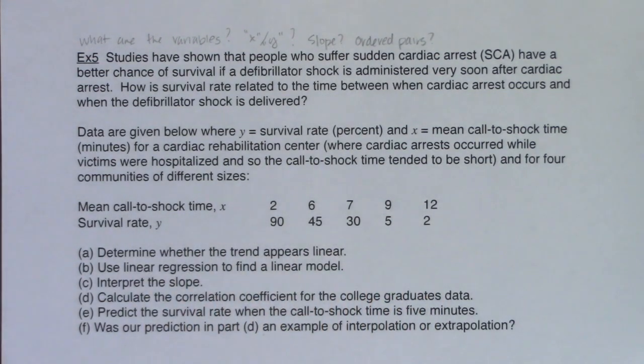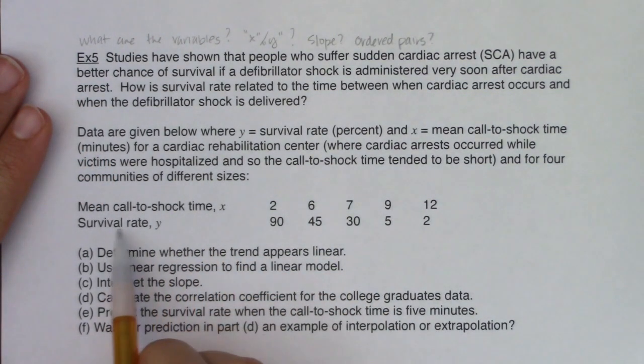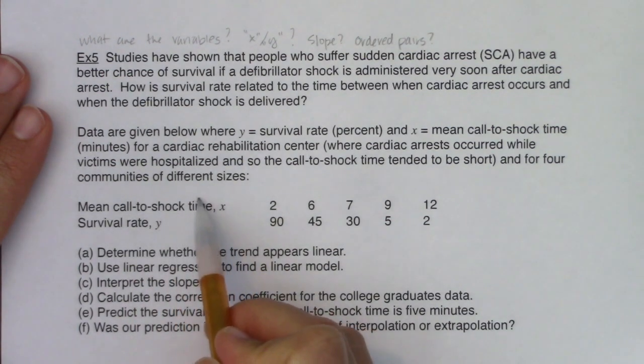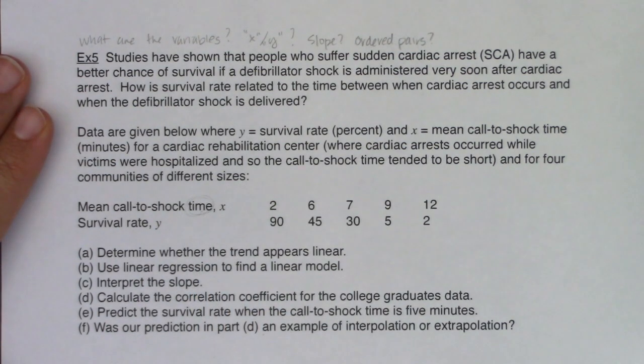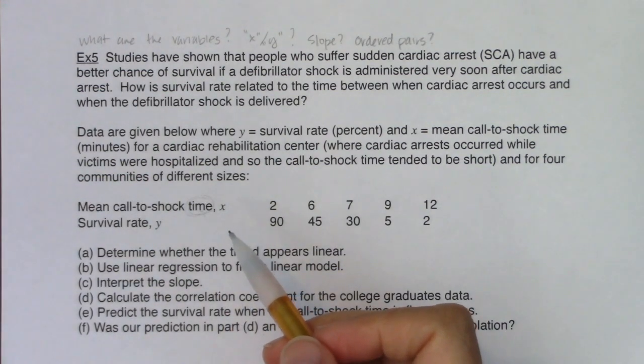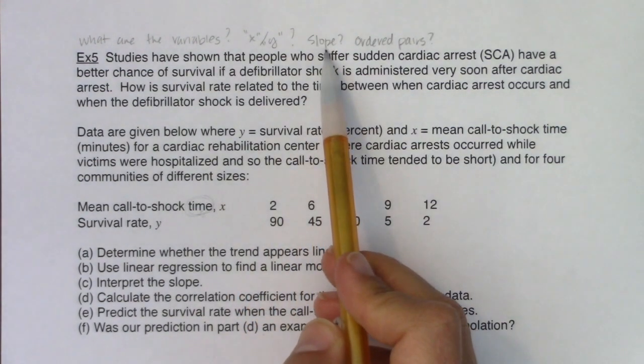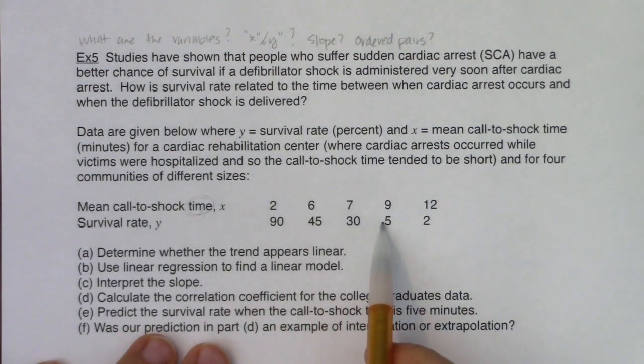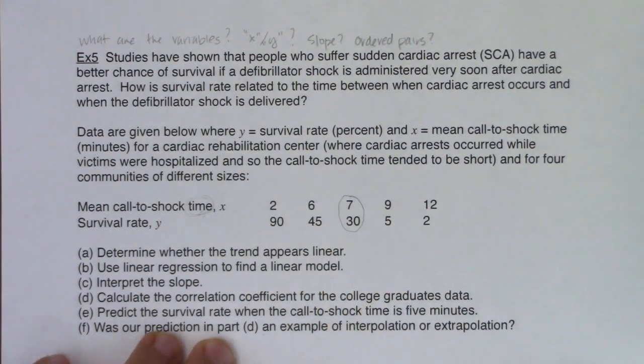So let's start to keep track of this stuff. What were the variables? They're here called shock time and survival rate and they are calling them x and y. I want you to notice that we have time. Time is our x variable. It is independent. I've said many times that when you have time as one of your variables, it's a pretty safe bet it's independent. Was I given a slope or was I given ordered pairs? Well, I was given a lot of ordered pairs.